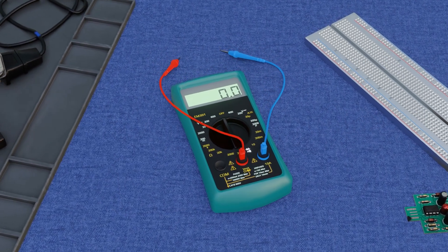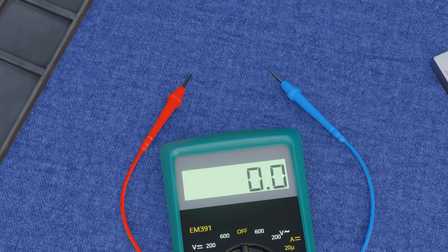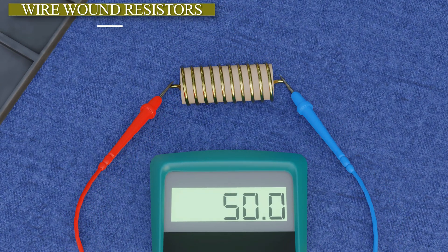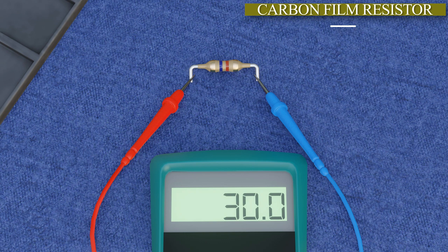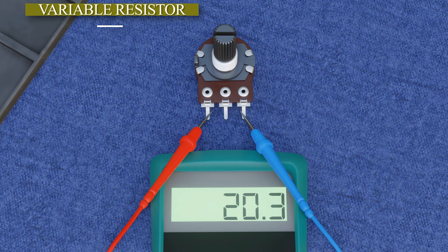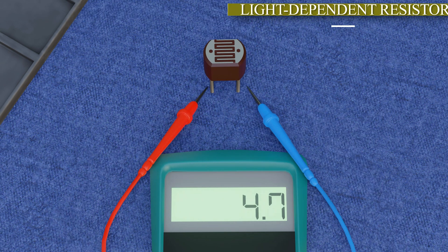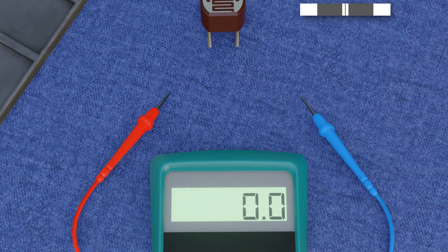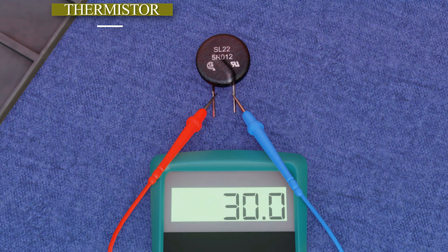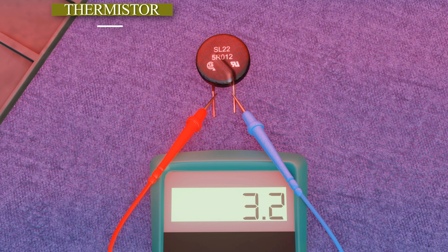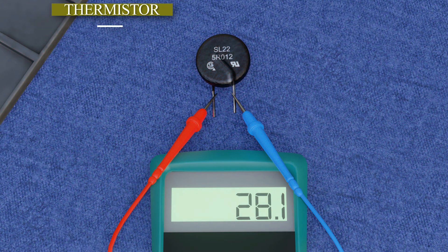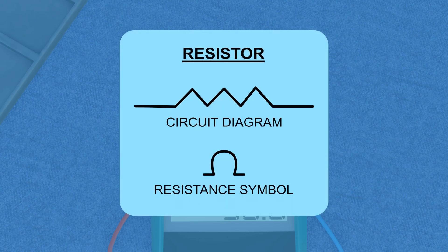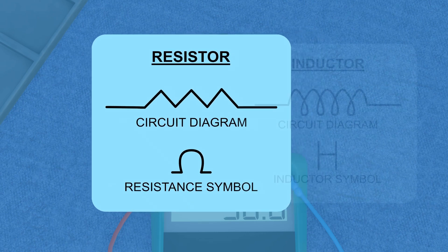Various types of resistors are used in different fields. Fixed resistors have constant resistance; examples include wire wound resistors and carbon film resistors. Variable resistors, like potentiometers, allow us to adjust resistance. Light-dependent resistors change their resistance based on light levels, while thermistors adjust their resistance according to temperature changes. Resistors are represented with a zig-zag symbol in circuit diagrams, distinct from the inductor symbol.